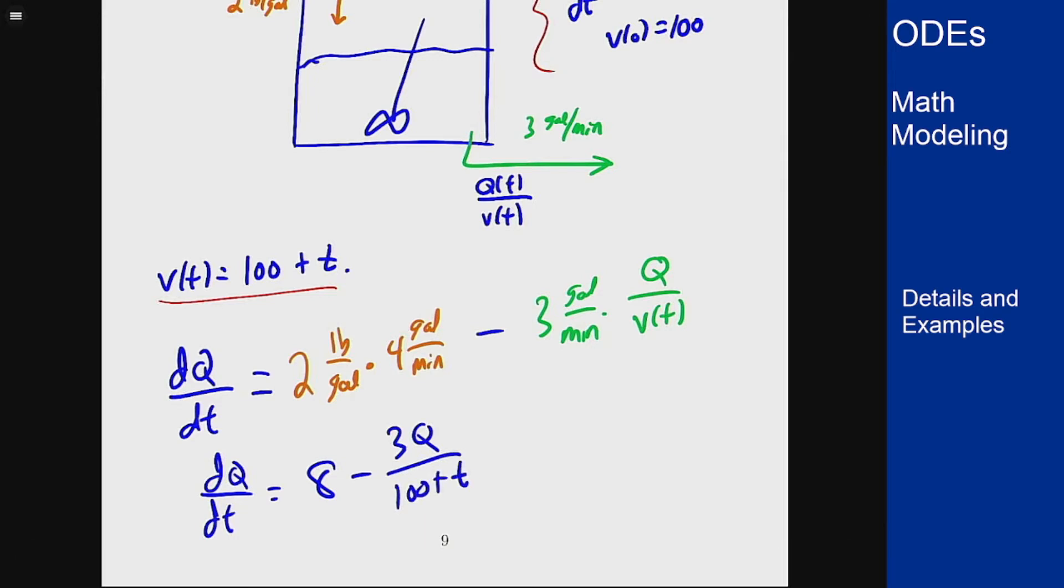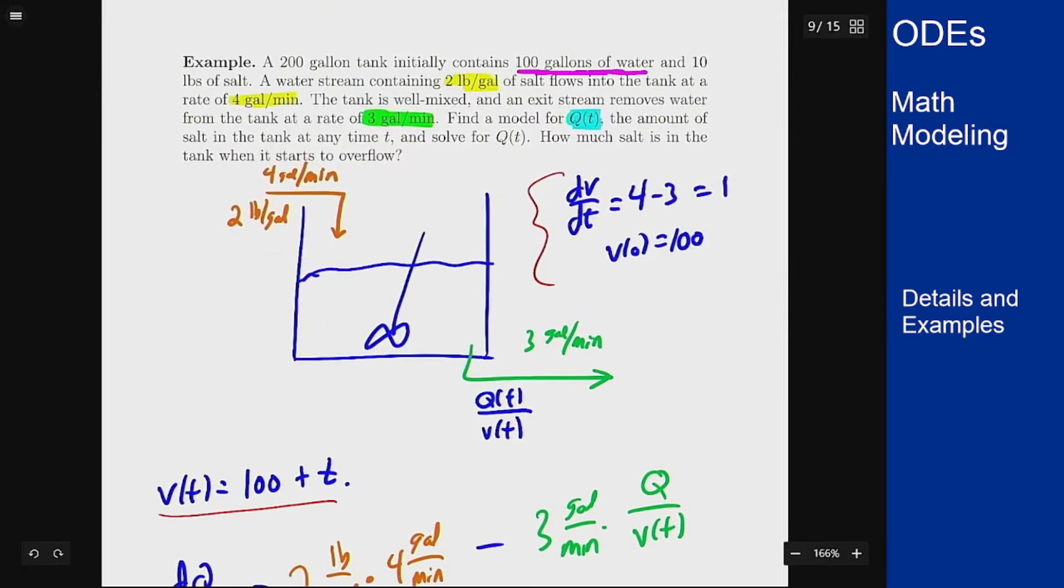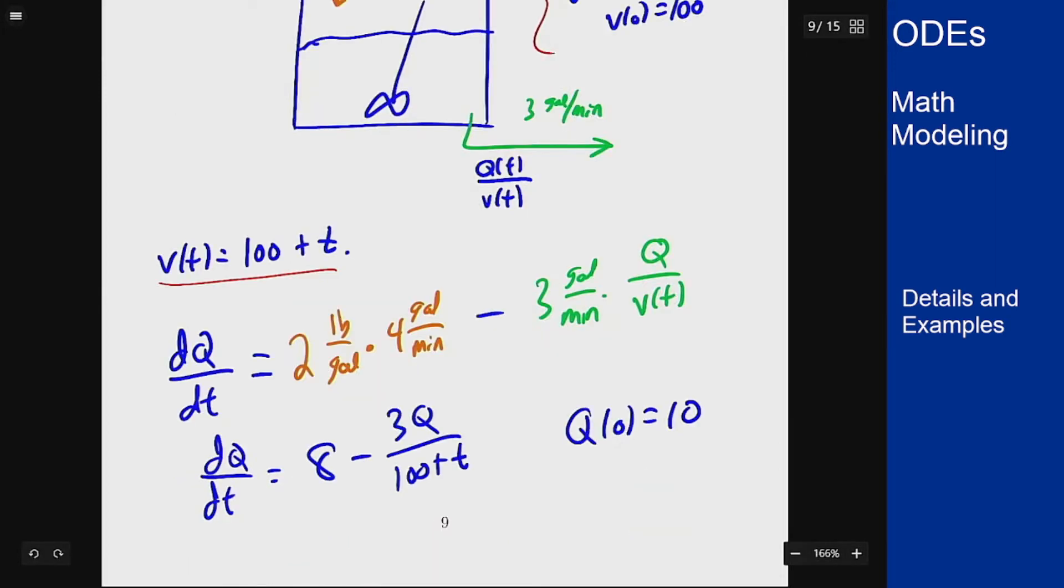And based on our problem we have an initial condition for this as well, and that is that Q(0) is 10 pounds. So that there gives our model for Q(t), the amount in this tank at any time t.